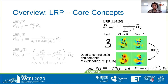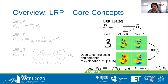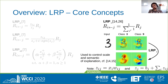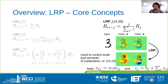Later publications introduced the flat rule, which uniformly distributes the relevance of a neuron across all its input neurons. This can be used, for example, to control the scale and semantics of explanations.